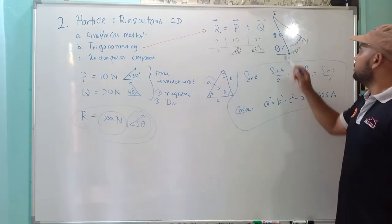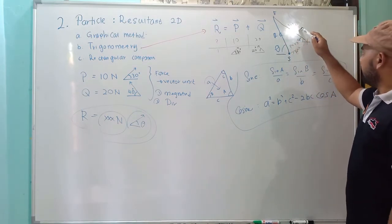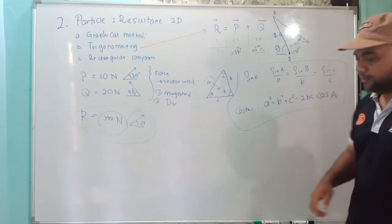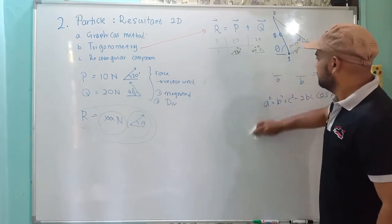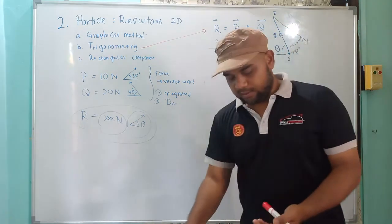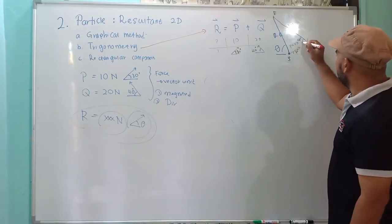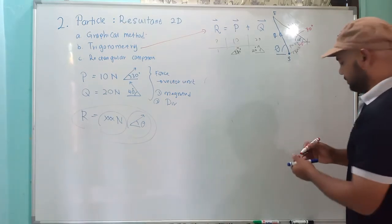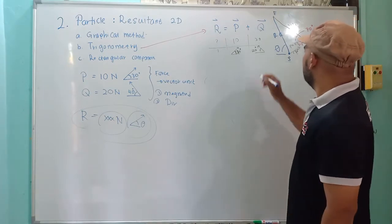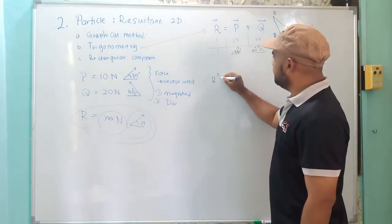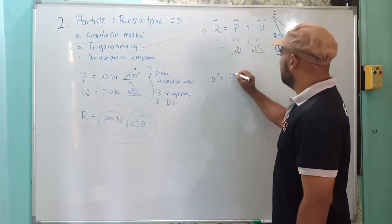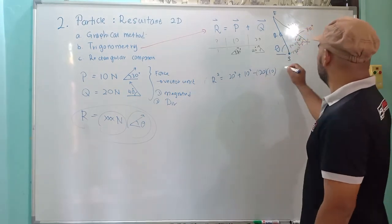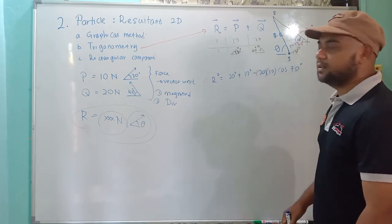For this example, we already know the lengths — this is 20, this is 10 — and the angle inside. The angle here: this is 30, so the alternate angle here must also be 30, so 40 plus 30 here is 70 degrees. We can use the cosine rule: R as A, so R squared equals 20 squared plus 10 squared minus 2 times 20 times 10 times cos 70 degrees.